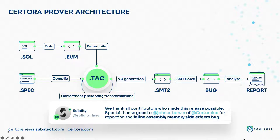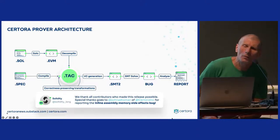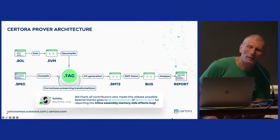The EVM is a stack machine, so we find a bound of the stack, decompile it, and create our own internal representation called TAC. Then we simplify the TAC, applying abstract interpretation techniques. For example, if you have load and store, we recover type information. This is actually how we find many bugs in the Solidity compiler itself — we enforce invariants about how the EVM code behaves, and if the compiler generates EVM code that violates our invariant, the compiler itself is wrong.